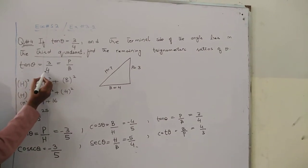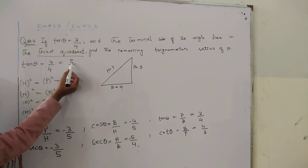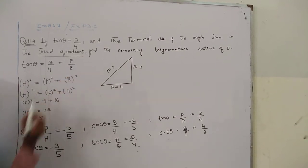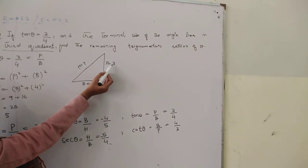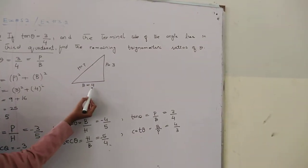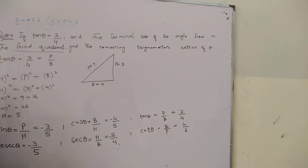Tan(theta) is equal to 3/4. The formula for tangent is perpendicular over base. This is the triangle: perpendicular is 3 and base is 4. And what is the hypotenuse?